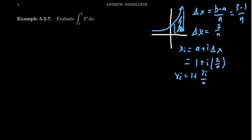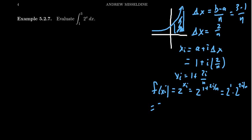We're going to evaluate the function at x_i. Our function is 2 to the x, so we end up with 2 to the x_i, which is 2 to the (1 plus 2i over n). By exponent rules, the plus in the exponent means this is the same as 2 to the 1 times 2 to the (2i over n). Since 2 to the 1st is just 2, and by other exponent properties we get 2 squared raised to the i over n, the preferred form is 2 times 4 raised to the i over n power.